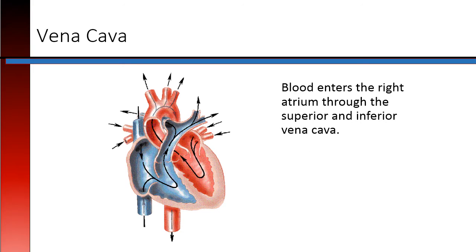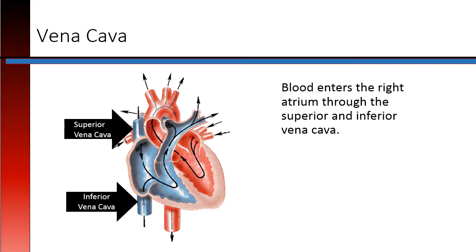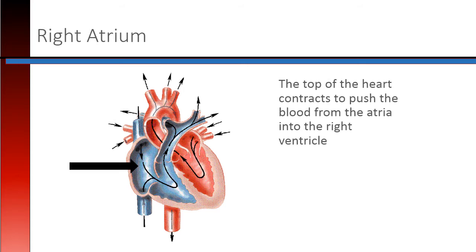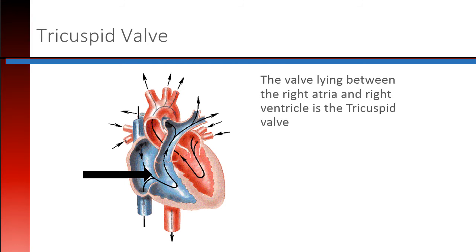The vena cava: Blood enters the right atrium through the superior and inferior vena cava. The right atrium — the top of the heart contracts to push the blood from the atria into the right ventricle. The tricuspid valve lies between the right atria and right ventricle.